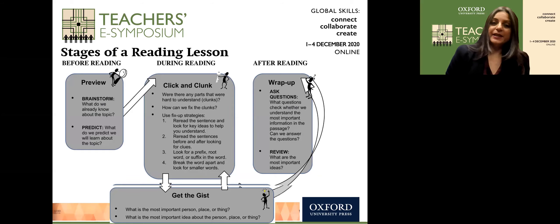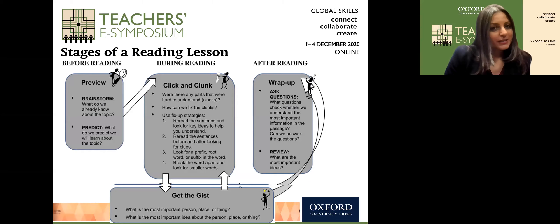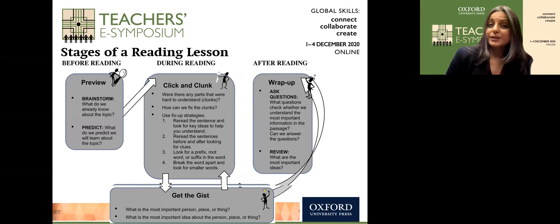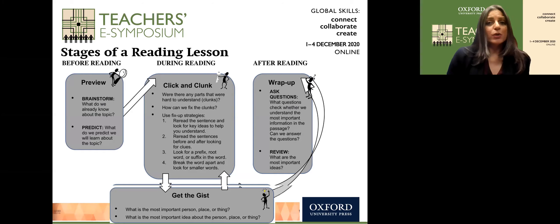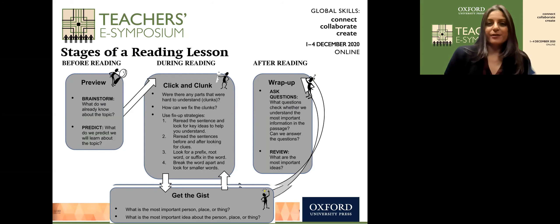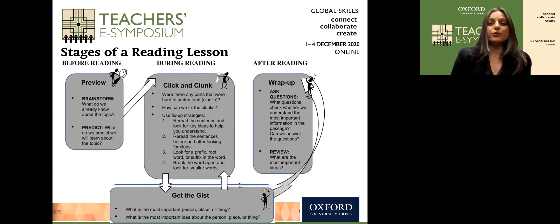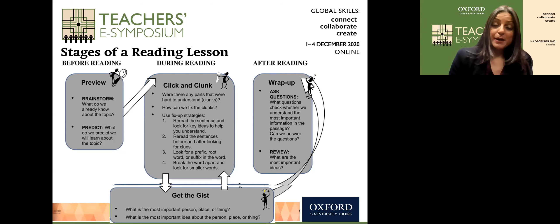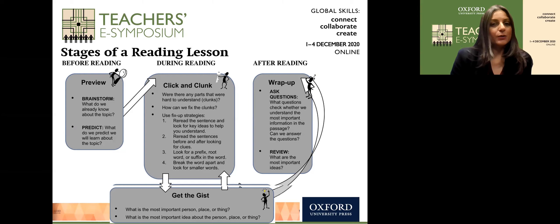The stages of a reading lesson include a preview before reading, where we brainstorm with the children and ask them to predict what a title might be about. For example, if your topic is about earthquakes, you might engage them in a discussion based on the five W's — where do earthquakes take place, what are earthquakes — and perhaps discuss some other natural disasters, including ones they might have experienced, asking them to narrate a story or recount a memory.